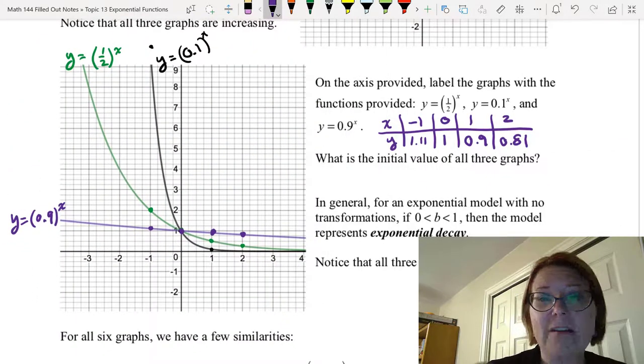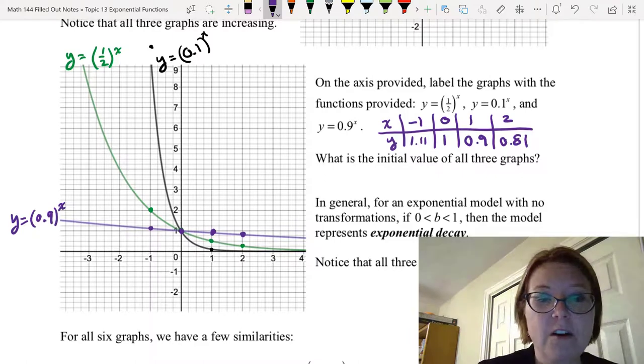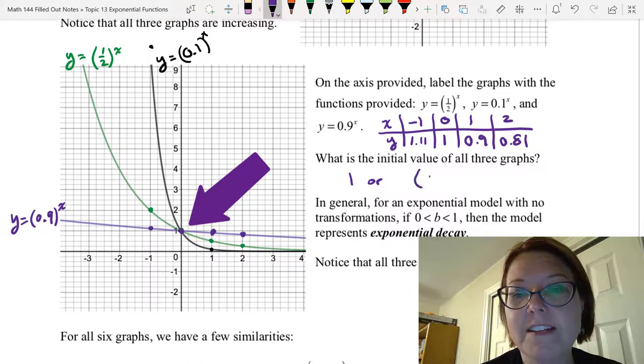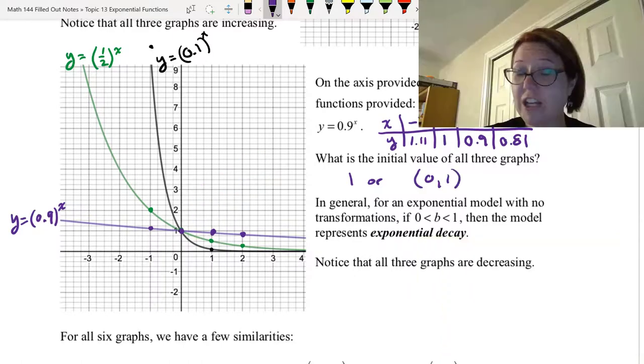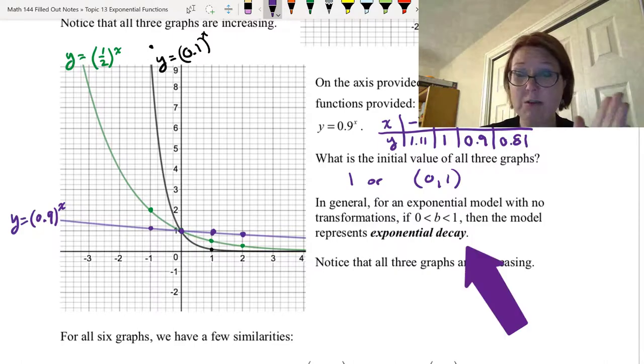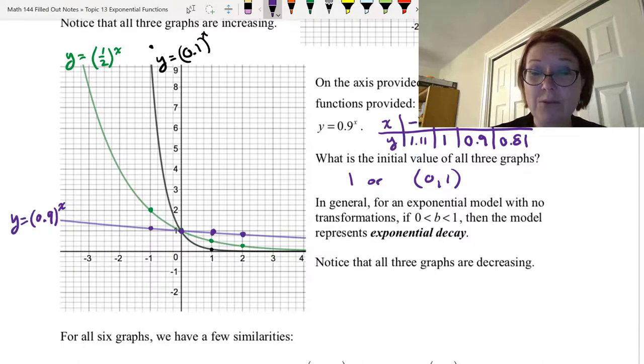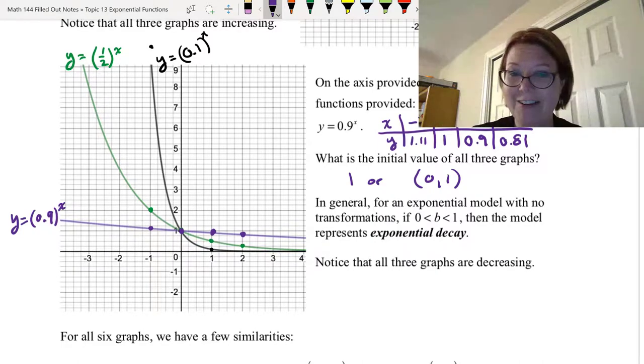Now, what's the initial value of all three of these graphs? Well, all three of these graphs have an initial value of 1, or the y-intercept of 0, 1. In general, for an exponential model with no transformations, if the b value is between 0 and 1, not including 0 and 1, then the model represents an exponential decay. Indeed, we can see in all three of these graphs that the graphs are decreasing. Those are decay curves.